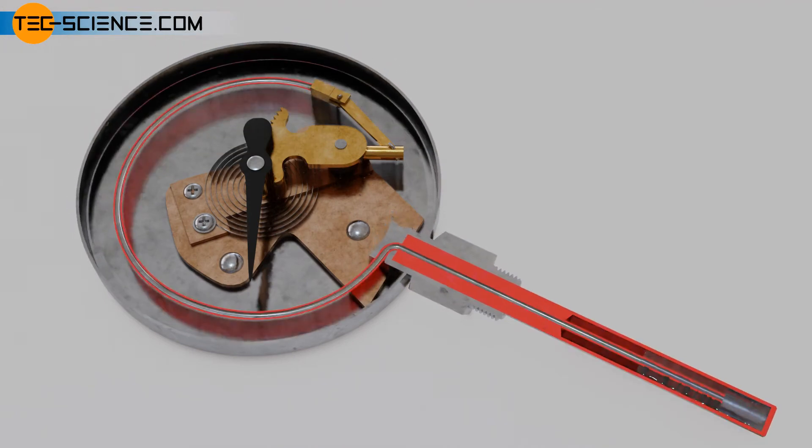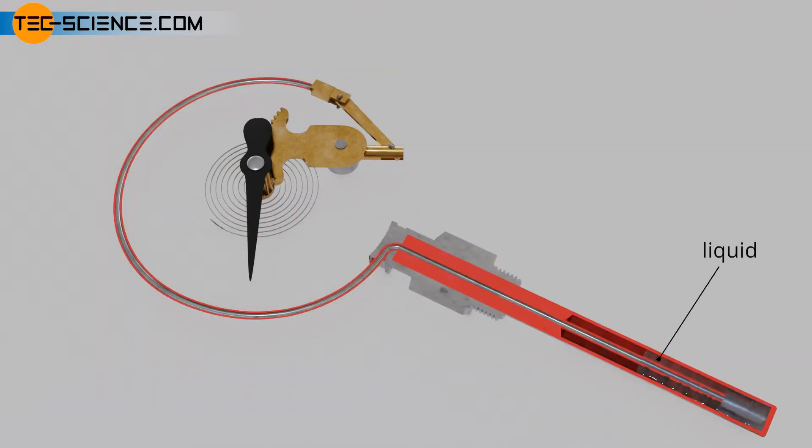In vapor pressure thermometers a highly volatile liquid is used, but only partially occupies the thermometer volume. The liquid begins to vaporize and fills the rest of the volume with vapor.